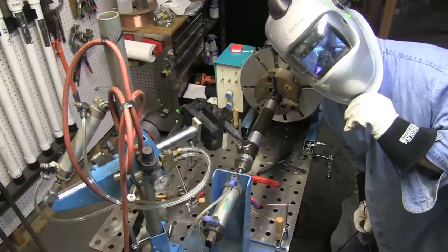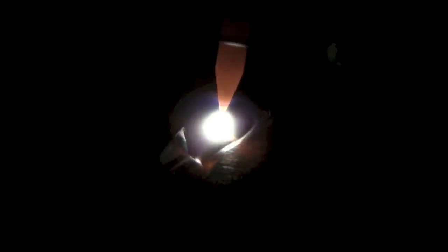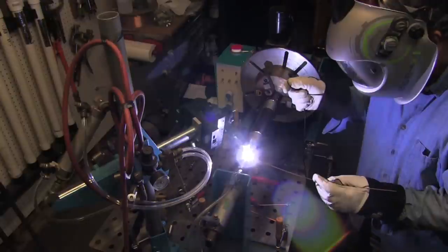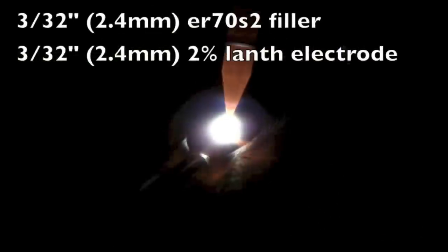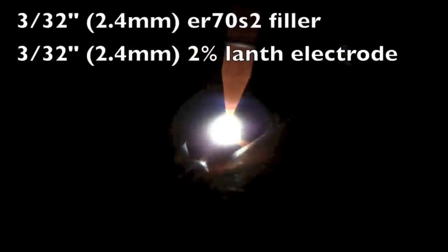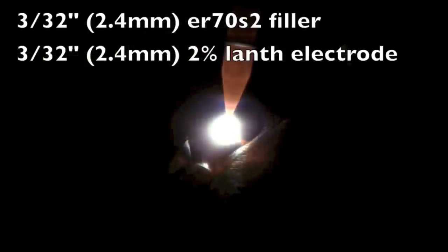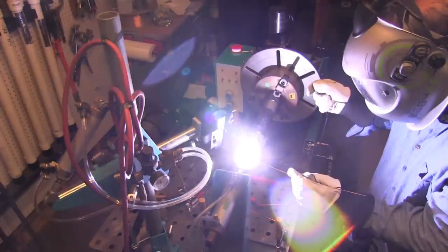All right, here we go. I've got a torch switch here, just one of those cheap import torch switches hooked up in the machine, not attached to the torch. I'm using it in one hand and feeding filler wire with the other, just using the lay wire, 3/32 diameter, that's 2.4 millimeter, ER70S-2 filler, 3/32nd two percent lanthanated electrode.